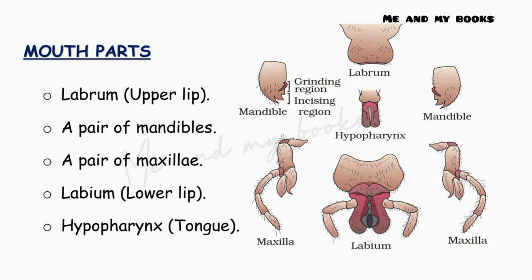The hypopharynx functions like a tongue. So the mouth parts of cockroach are: labrum (upper lip), a pair of mandibles which help in grinding and incising (cutting) food, a pair of maxillae, labium (lower lip), and hypopharynx which functions as a tongue.